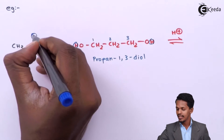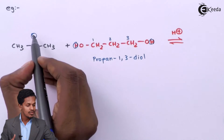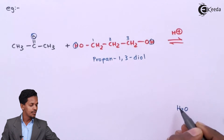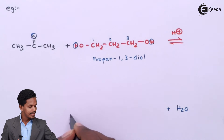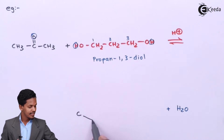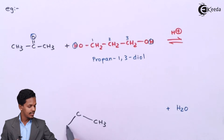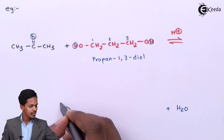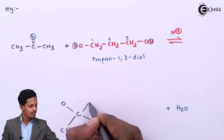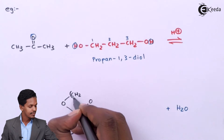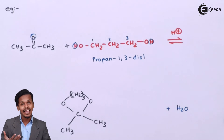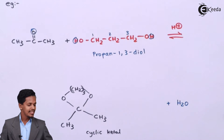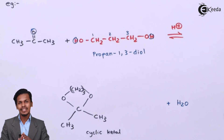The reaction proceeds by removing the two OH hydrogens along with the carbonyl oxygen as water, H2O, as a byproduct. The main product has the central carbon bonded to two methyl groups, with both oxygens connected via three CH2 groups forming a six-membered cyclic ring. This is a cyclic ketal, and since it is formed from acetone, it is called acetone cyclic ketal.